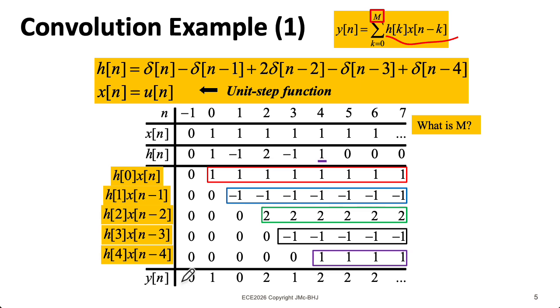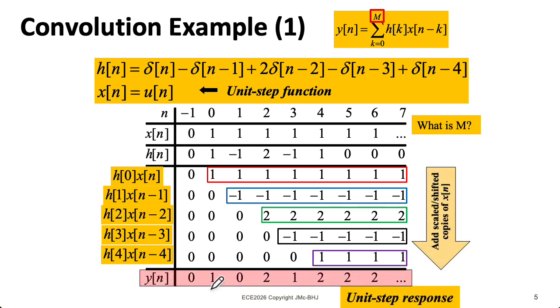And then to get the final values of y, we sum along the columns. This 1 and minus 1 cancel, and this minus 1 and 1 cancel, and then I'm left with 2. And at this point, I notice I have the same pattern for the remaining columns. So my final calculation for the output y of n is 1, 0, 2, 1, and then an infinite number of repeating 2s.